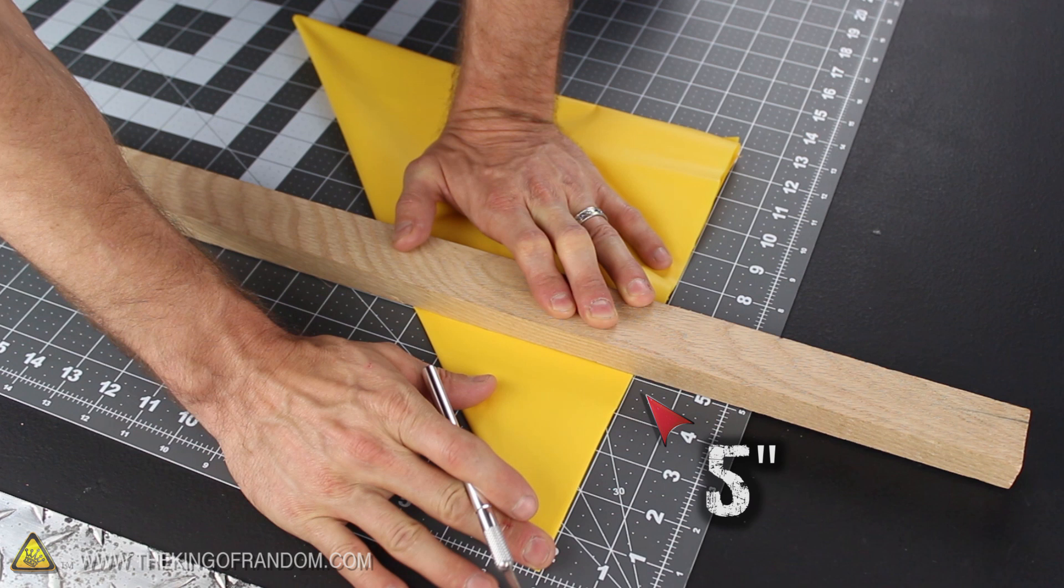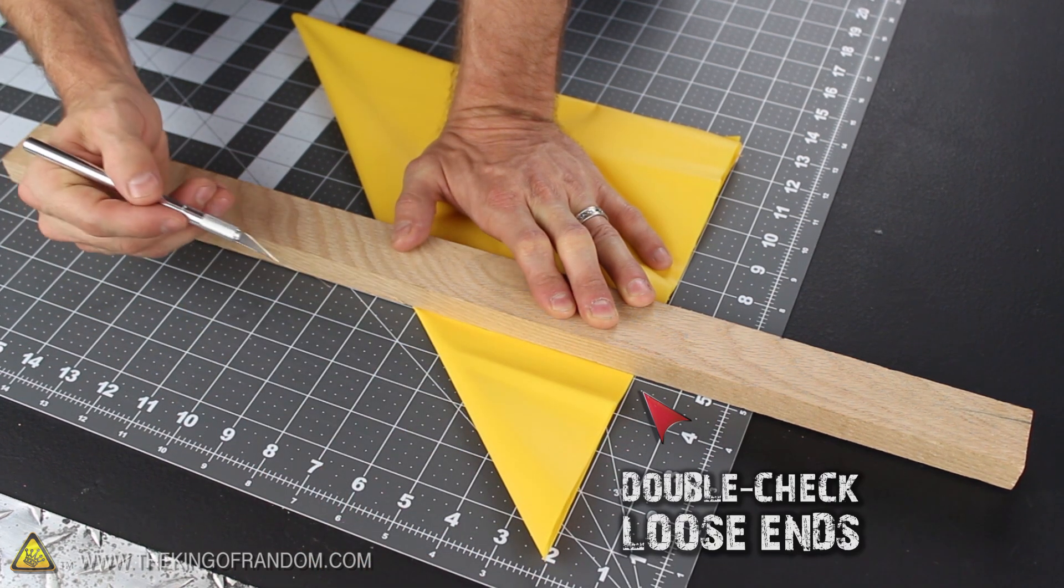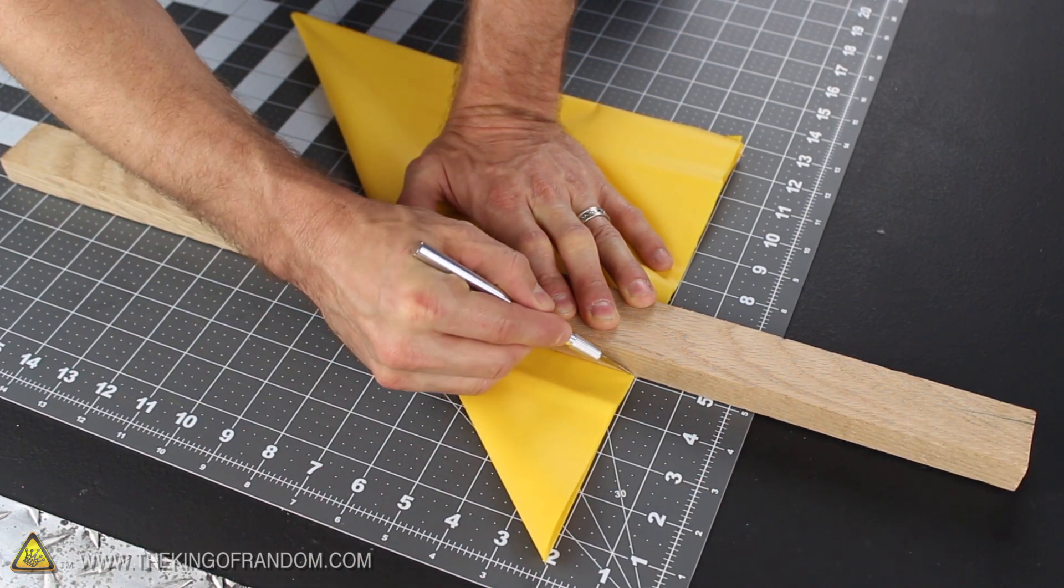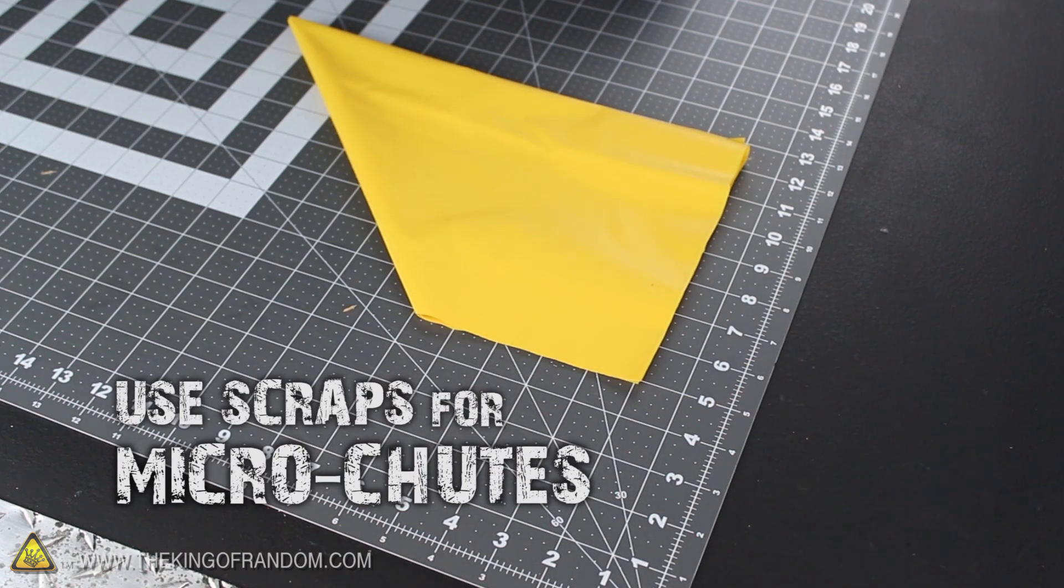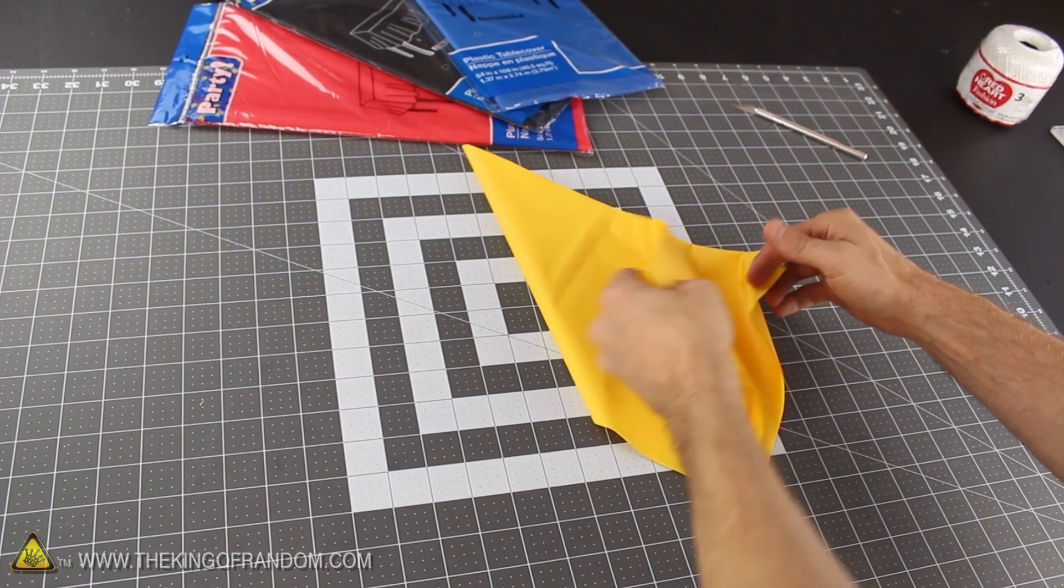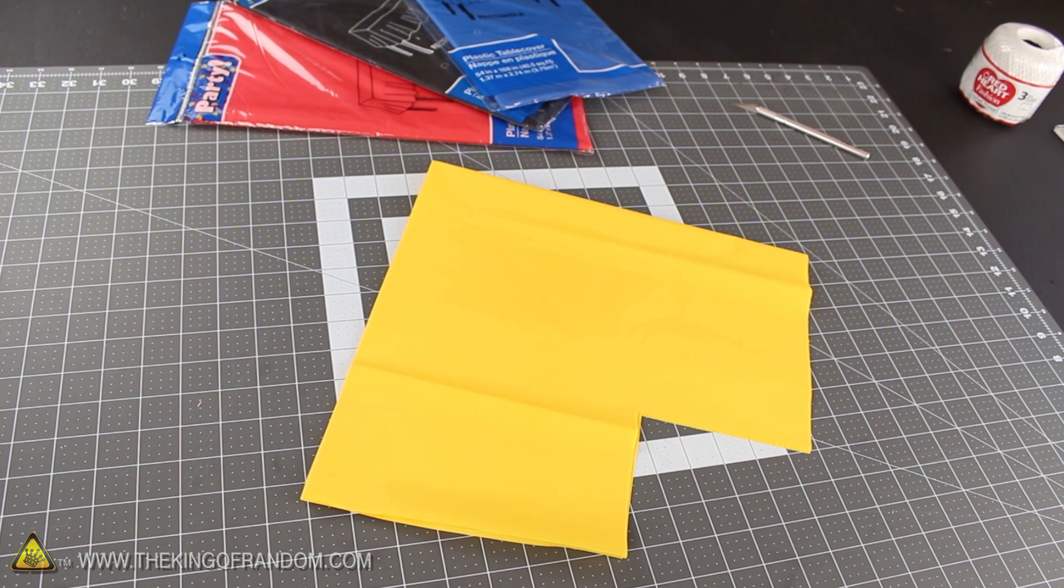Now measure up 5 inches from the bottom, double checking that the loose ends are on the right side, then go ahead and cut the bottom piece off. And you could use these scraps for making micro parachutes if you wanted to. At this point, unfold your triangle and you'll see a little square chunk missing from the bottom right corner.